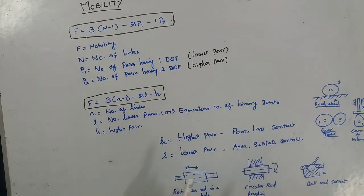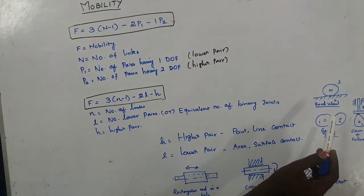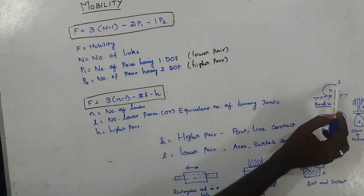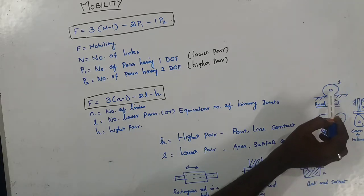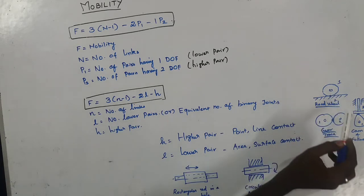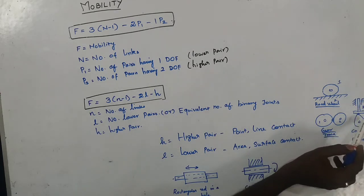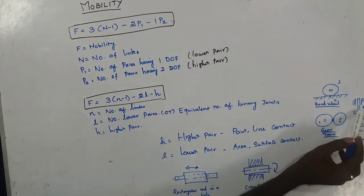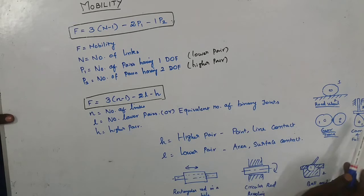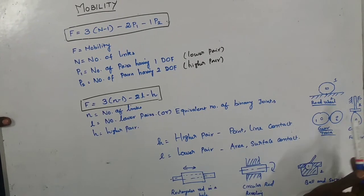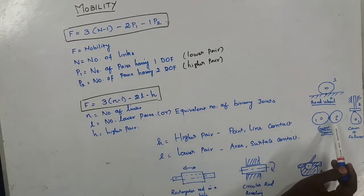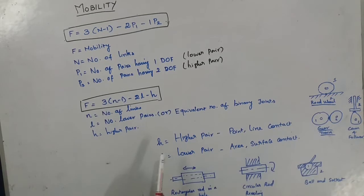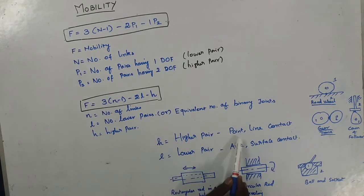A higher pair occurs when the contact surfaces of two links are dissimilar — for example, a wheel rolling on a road (point contact), a cam and follower (point contact), and meshing gears (line contact). Higher pairs involve point or line contact between two links. H and p2 are the same.